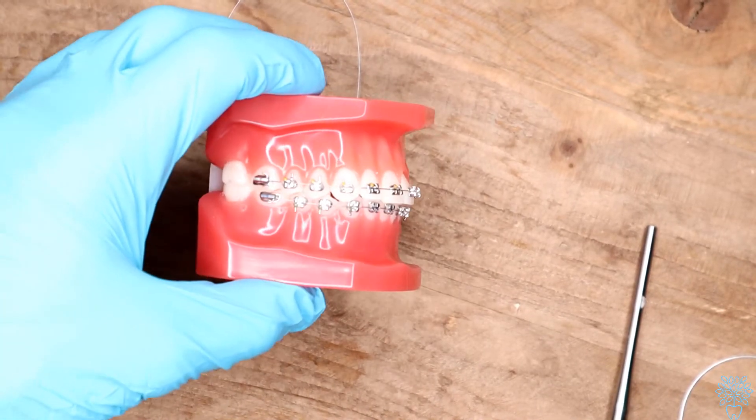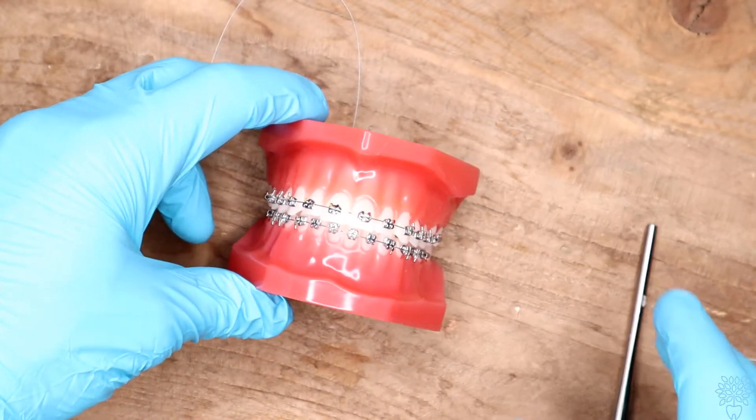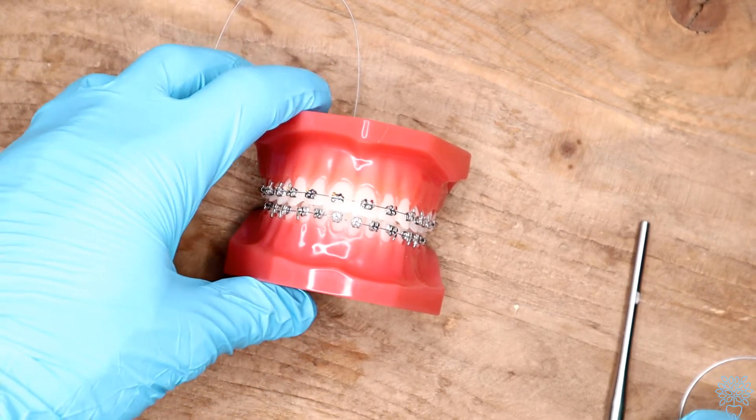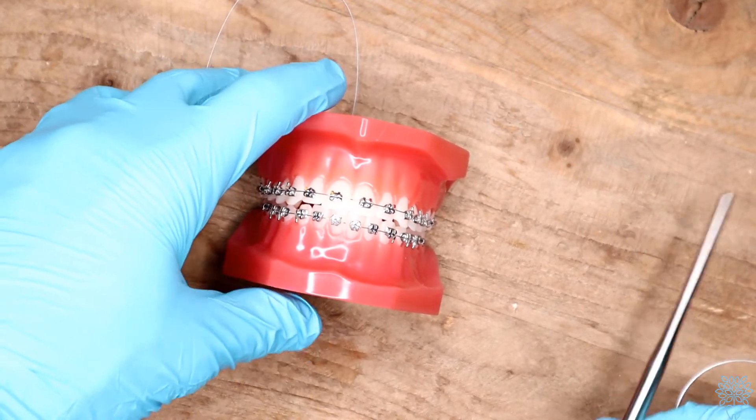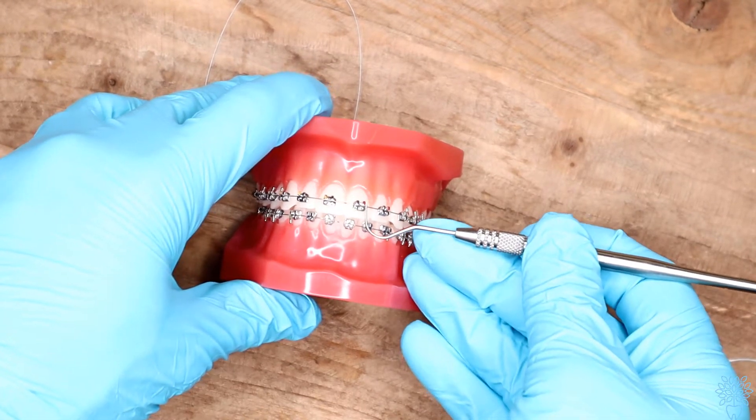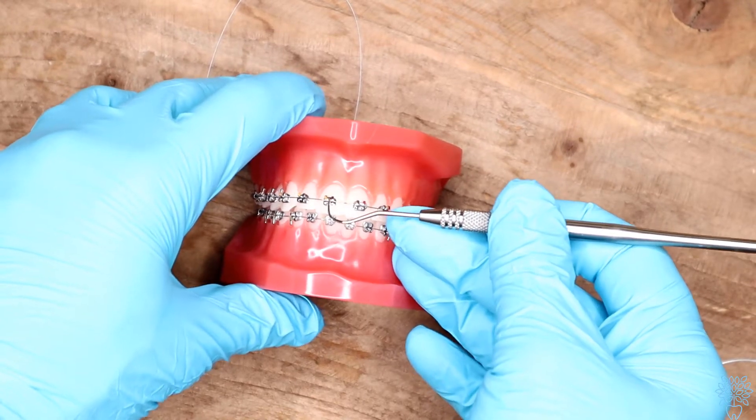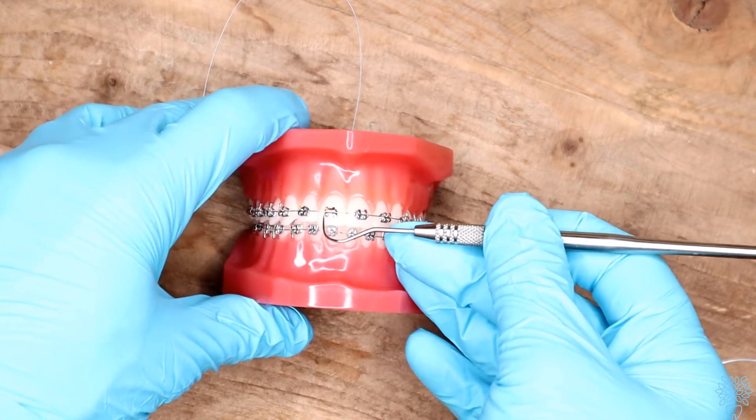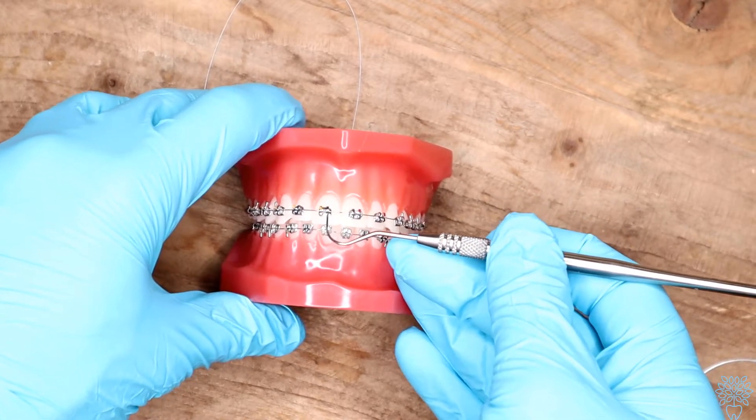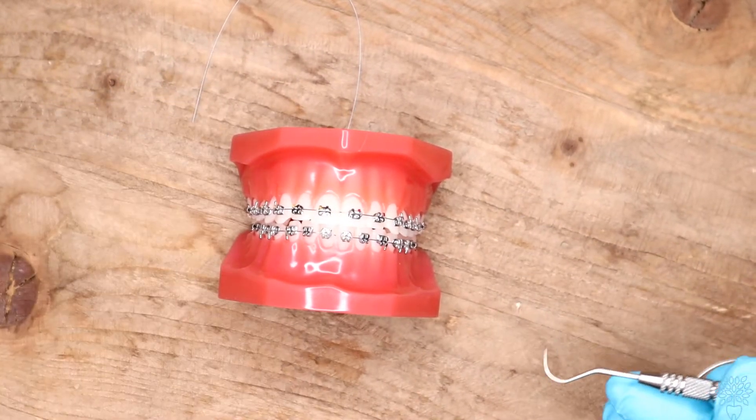All right guys, so let me explain how braces work. So yes, they're partially magic, but there are also a lot of science involved too. So let me explain some of the basics of braces. So right here, these are actually the brackets. So these are the braces and then this is the wire that goes in between. Kind of hard to see because on these teeth, we don't have any colors, but normally there'd be colors that go around the teeth.